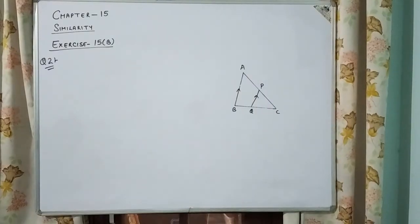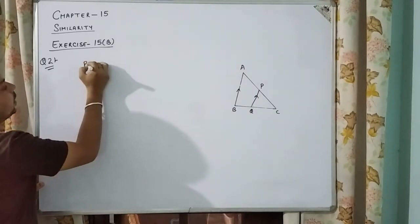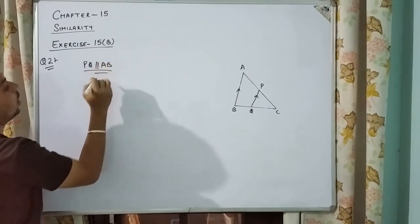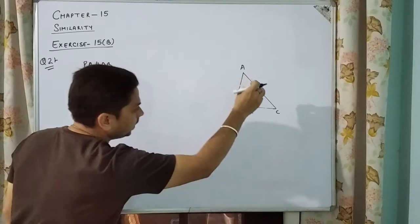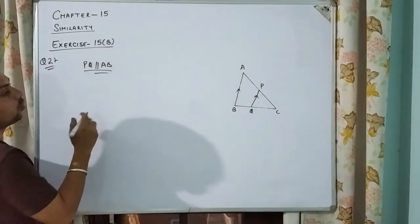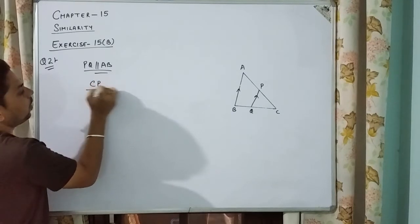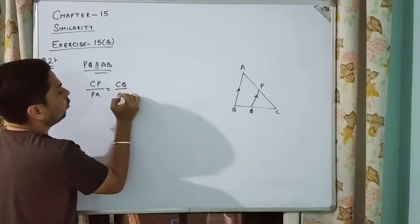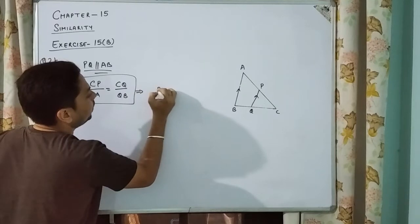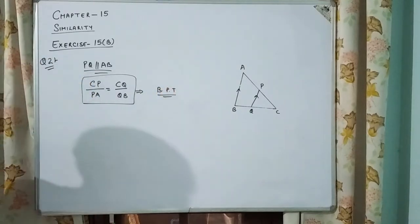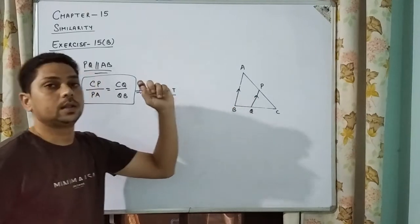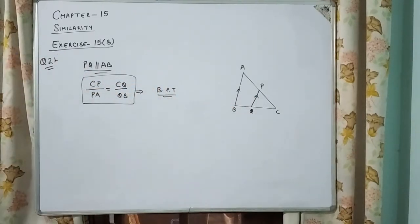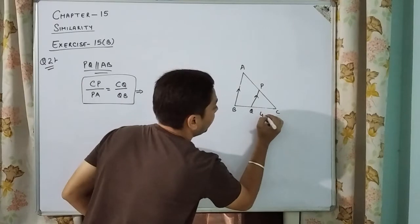Question 2: In the figure, PQ is parallel to AB. Since PQ is parallel to AB, we can apply BPT theorem. According to BPT theorem, CP upon PA equals CQ upon QB. Given values: CQ equals 4.8, QB equals 3.6, and AB equals 6.3.